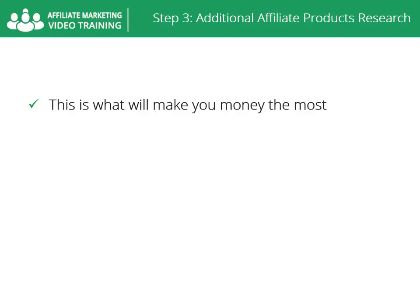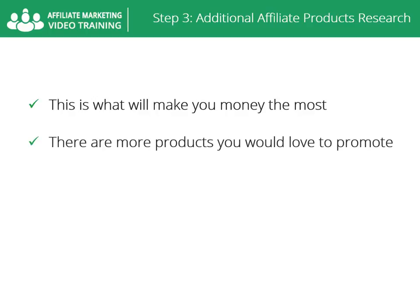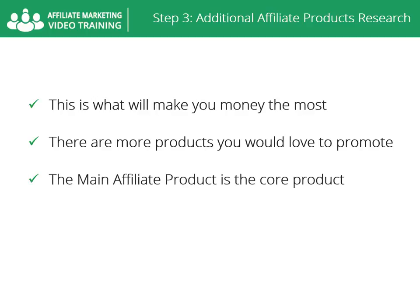You already found out what the main product is you'd like to promote. But you've also noticed there are so many great products you would love to promote — and you can promote all of them as well. That's what this step is all about. The main affiliate product is the core product you will start promoting, and to which you will dedicate the most of your advertising efforts.